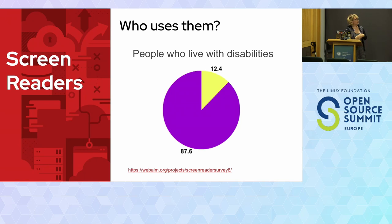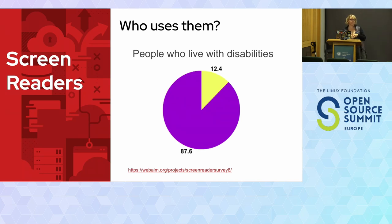In the eighth iteration of the WebAIM survey, they asked how and why people use screen readers. They found that almost 88% of people use screen readers because they live with a disability. Of those, 71% rely on the screen reader audio alone. That's an important thing to think about — people are using the audio aspect of your website, so if something isn't live text, they're not going to have access to that information.